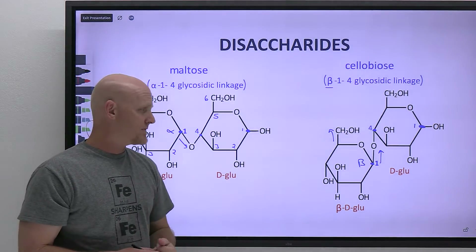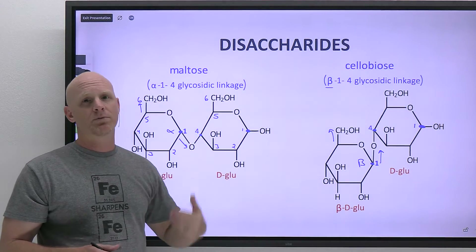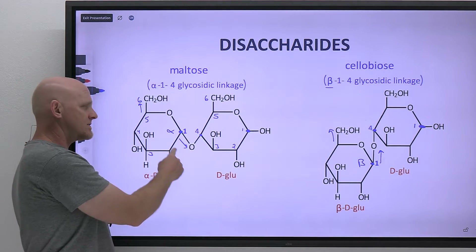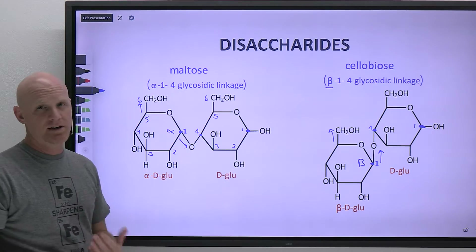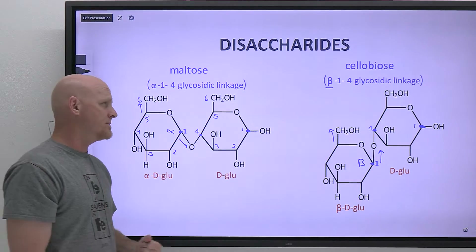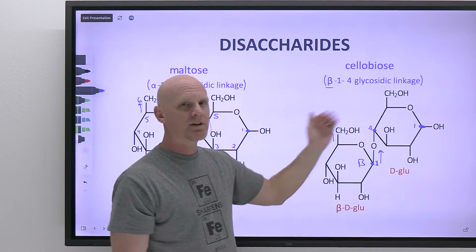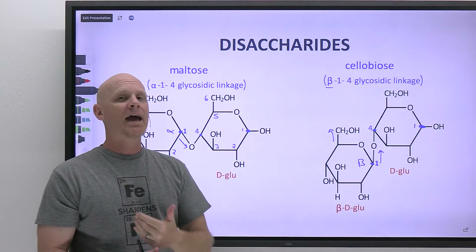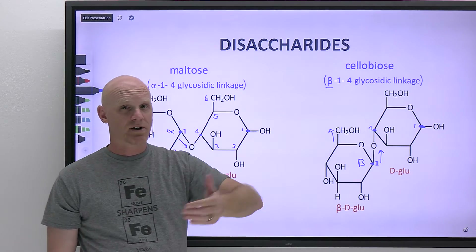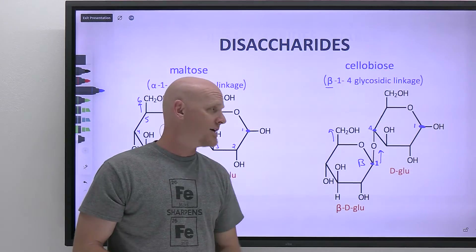One important thing to note: your enzyme amylase — found in your saliva and produced by your pancreas — can break the alpha-1,4 glycosidic linkage, so you can digest maltose and the starch it comes from. However, in cellobiose you have a beta-1,4 glycosidic linkage, and amylase cannot break that one down. That's why you cannot digest cellulose or cellobiose — it passes through you as fiber instead.